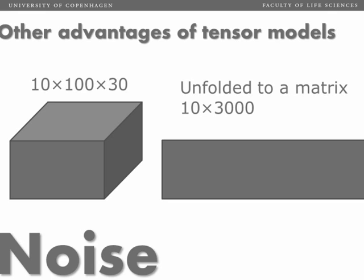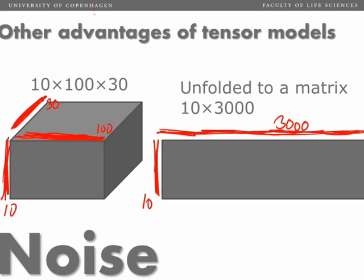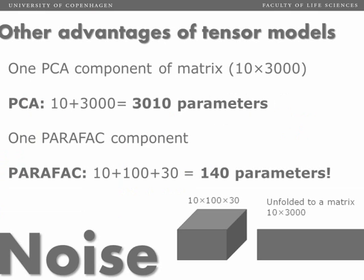If I build a PARAFAC model of the three-way array, one component from such a model would have 10 + 100 + 30 parameters, the loadings in each mode. If I build a PCA model, each component would have 10 score values and 3,000 variables, loadings in the variable mode. Clearly, there's a lot more parameters in the PCA components than in the PARAFAC components.